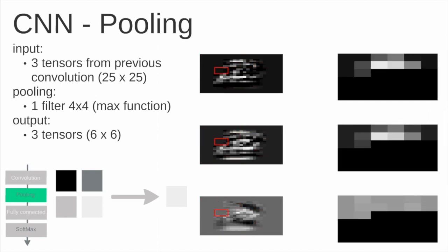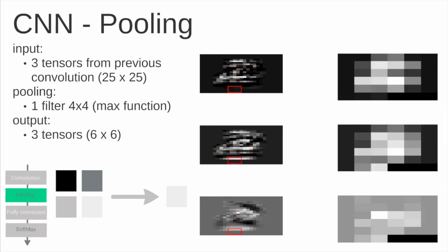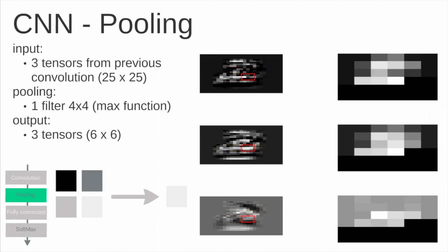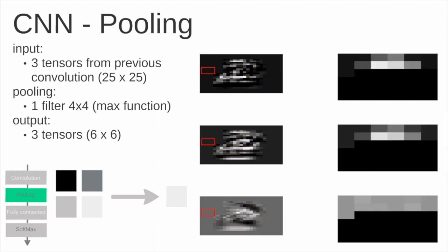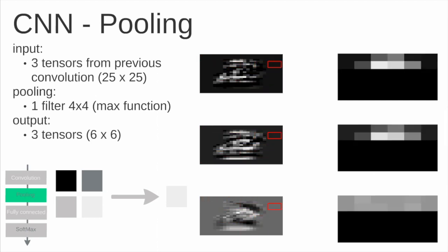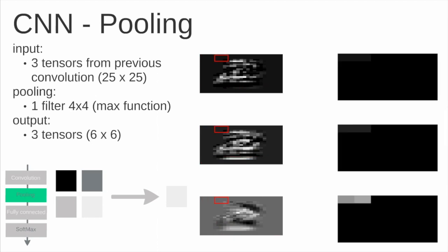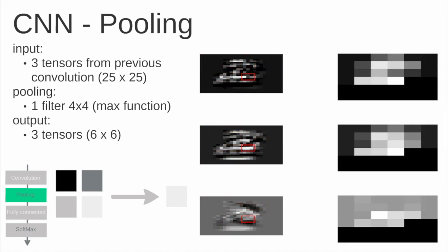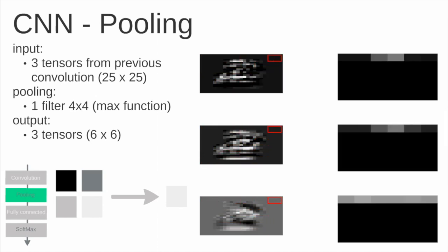In our example we have the three tensors from the previous convolution. We apply a filter of four by four, so we get four times four pixels. The algorithm will choose the max or the maximum value of the pixel to be the output, so we reduce the size of our image.